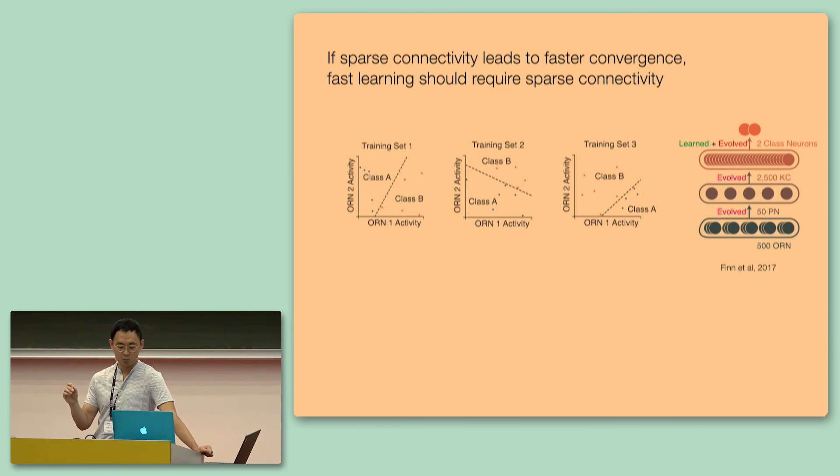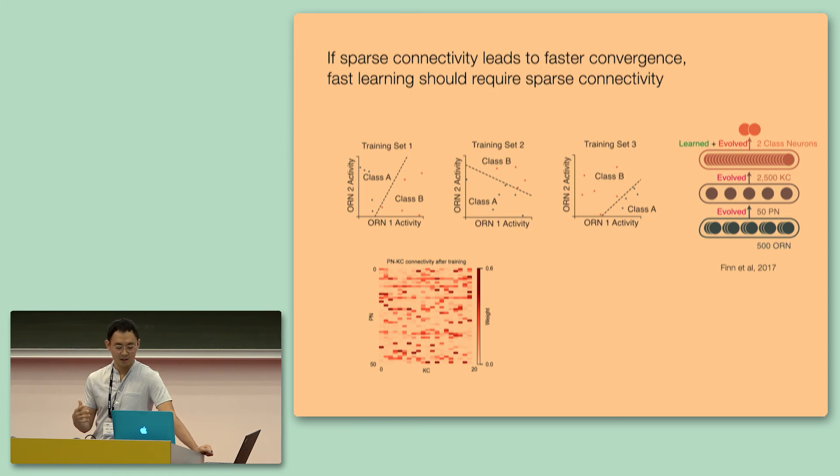And we've constrained only the output layer, from the canyon cells to the readout neurons, to learn during a new dataset. Conceptually, this is like we are evolving the connectivity between every single layer and relegating learning to only occur at the output layer, which is also exactly biologically inspired. And indeed, we see that the connectivity that emerges from the PN layer to the canyon cell layer is also the sparse connectivity. Therefore, sparse connectivity is what supports fast learning as well. And we also see the same glomerular solution to emerge from ORNs to PNs.